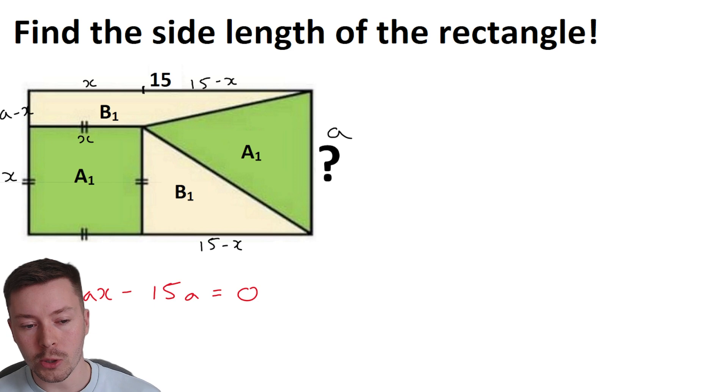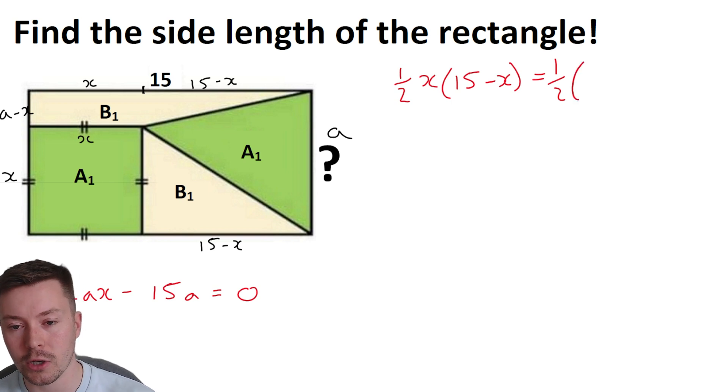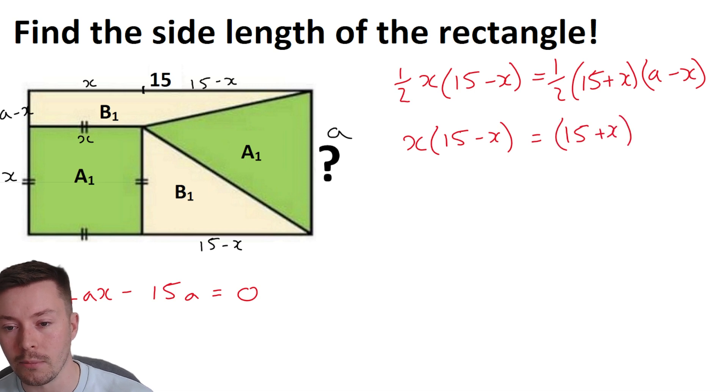And I am going to start now looking at the B1s. Right, so B1, the bottom right triangle, that is going to be a half of X times by 15 minus X. And then we've got the area of this top trapezium. Now, the area of the trapezium is half the sum of the parallel sides. So the parallel sides are 15 and X, so that's going to be 15 plus X times by A minus X.